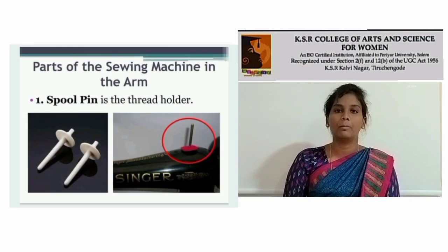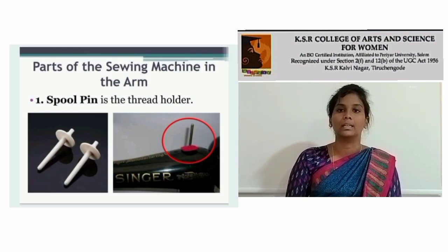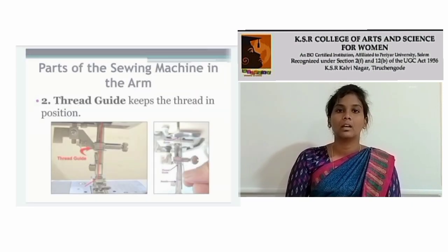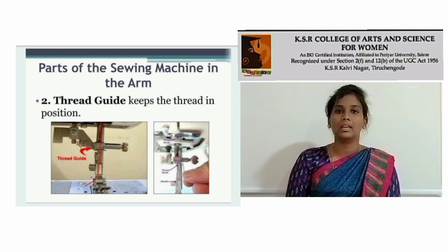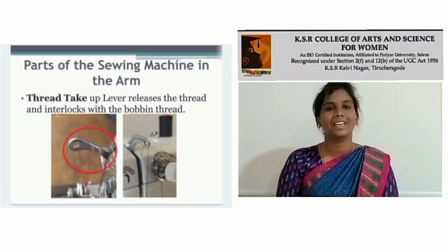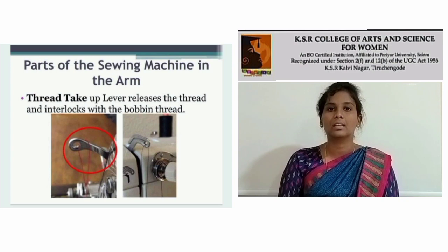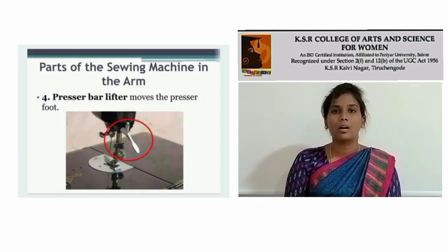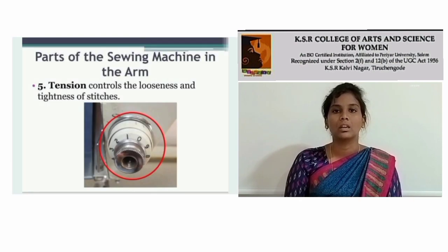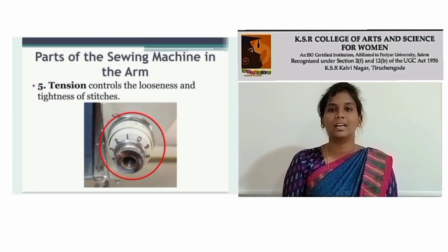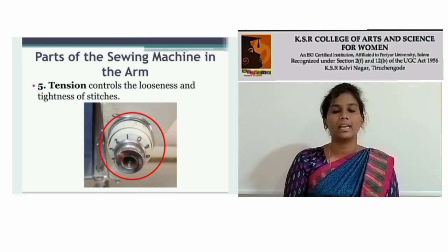Spool pin — this is the thread holder. Thread guide — keeps the thread in position. Thread take-up lever — the thread is interlocked with the bobbin thread. Pressure bar lifter — moves the pressure foot. Tension — controls the looseness and tightness of stitches.